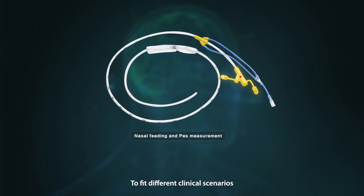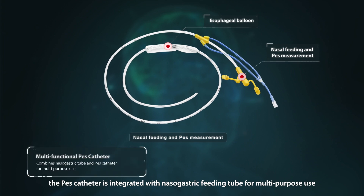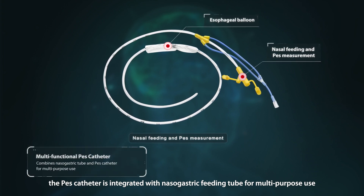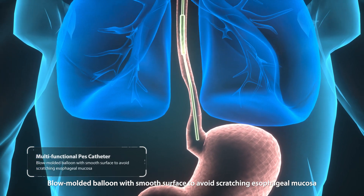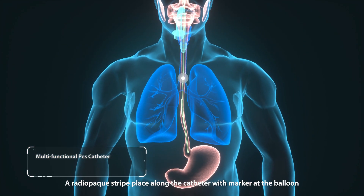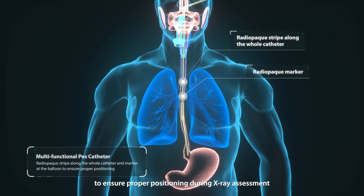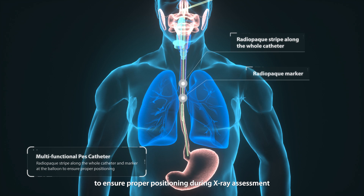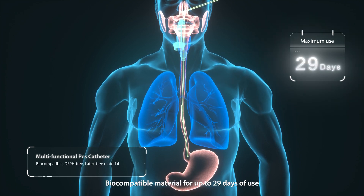To fit different clinical scenarios, the PES catheter is integrated with a nasogastric feeding tube for multipurpose use. A blow-molded balloon with a smooth surface avoids scratching esophageal mucosa. A radiopaque stripe is placed along the catheter with a marker at the balloon to ensure proper positioning during X-ray assessment. Biocompatible material allows up to 29 days of use.